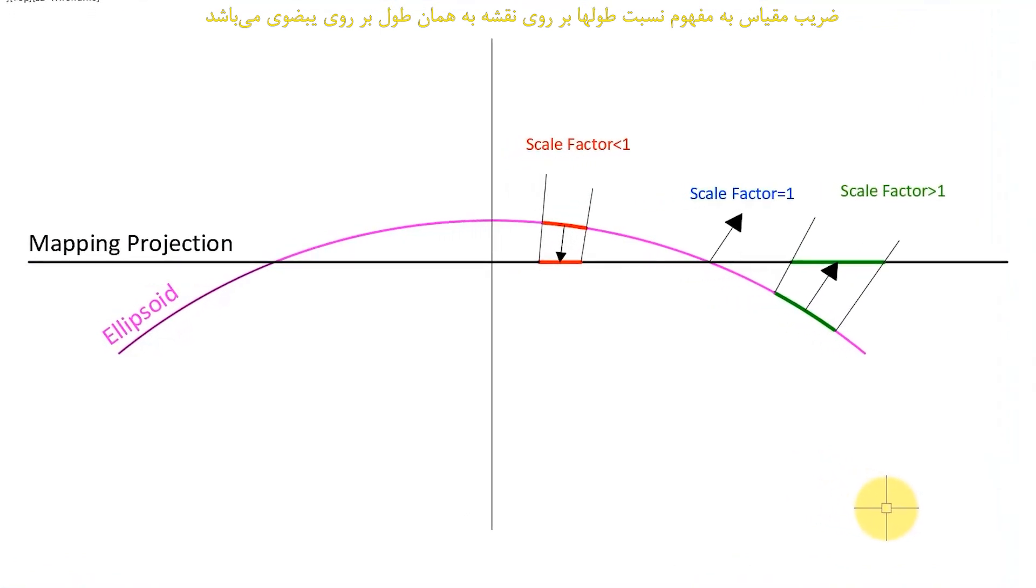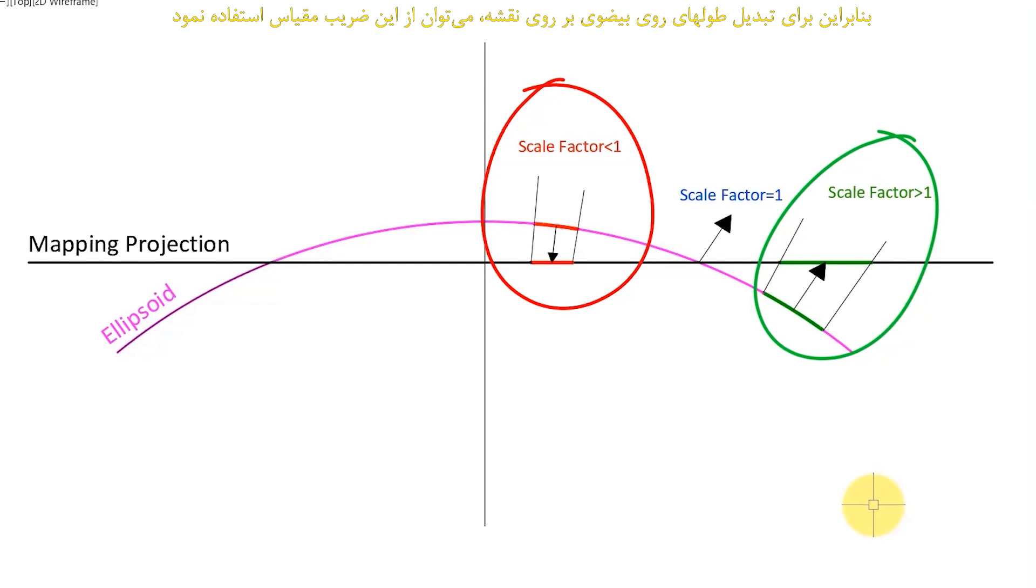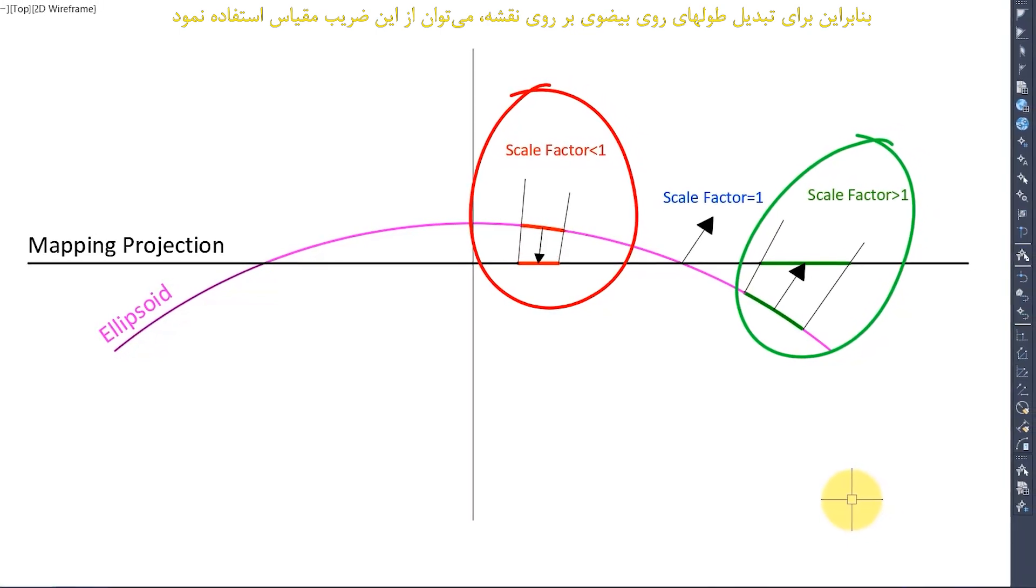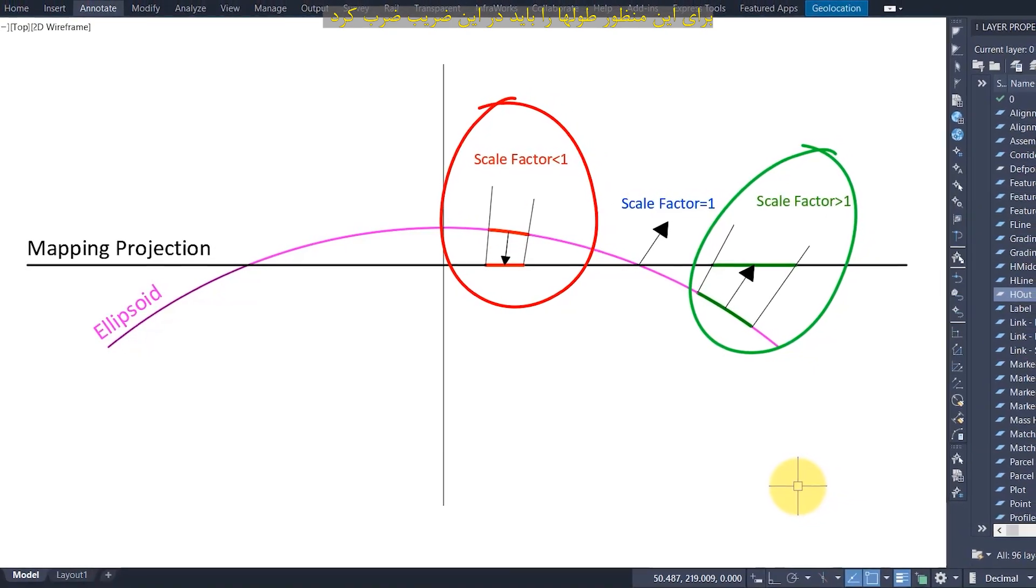Scale factor means the ratio of lengths on the map to the same lengths on the ellipsoid. Therefore, this scale factor can be used to convert the lengths on the ellipsoid to the map. For this purpose, these lengths must be multiplied by this factor.